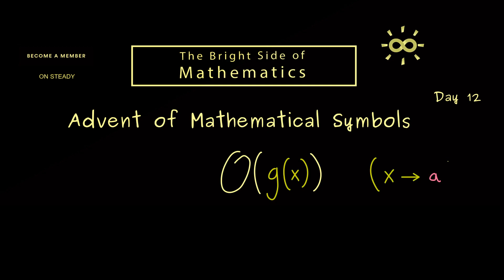For example you can write at the end that the variable x goes to the number a. Also it's allowed that this a is the symbol infinity or the symbol minus infinity.